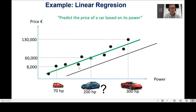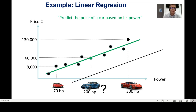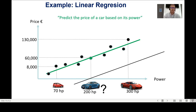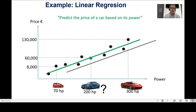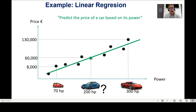The algorithm starts by drawing a line and measuring the error — the distance from the line to each real data point, summed up. Say the error is 300. Then it moves the line and measures again: if the error is bigger, it moves back. It keeps adjusting until it finds the minimum error. The green line is the one with the minimum error to the real data. That's linear regression — the model is the line with minimum error.